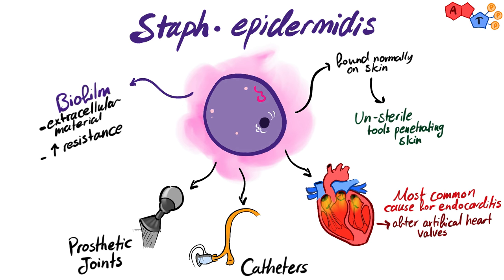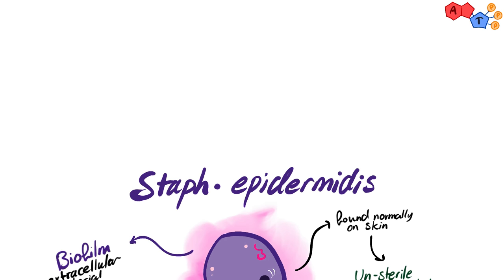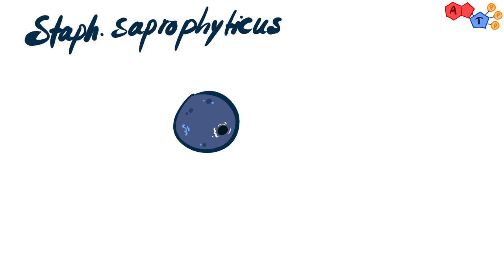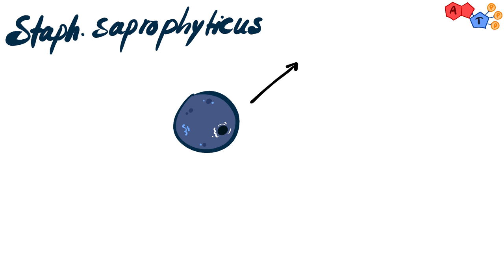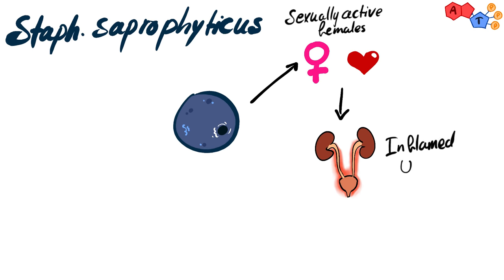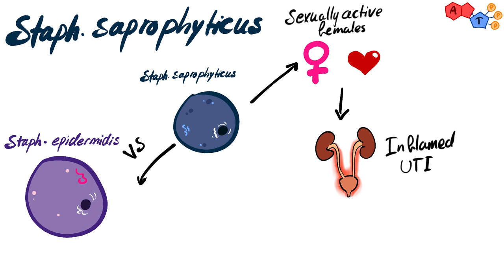Now we'll talk about the last organism in this video: staph saprophyticus. It's usually related to sexually active females, in whom it can cause urinary tract infections. One thing to distinguish between staph epidermidis and staph saprophyticus is that the latter is novobiocin-resistant.